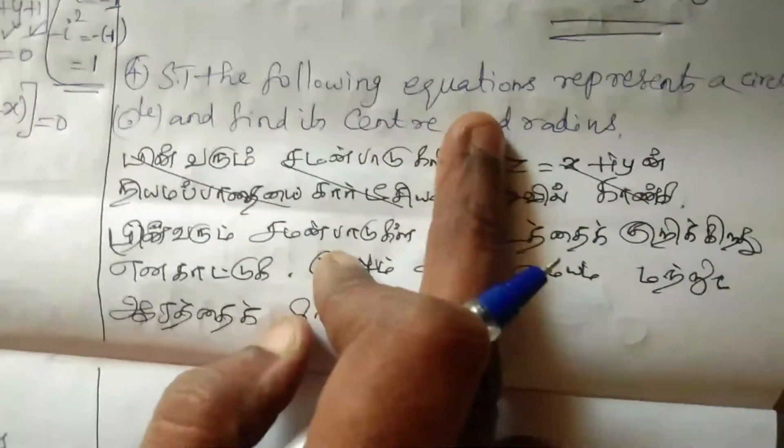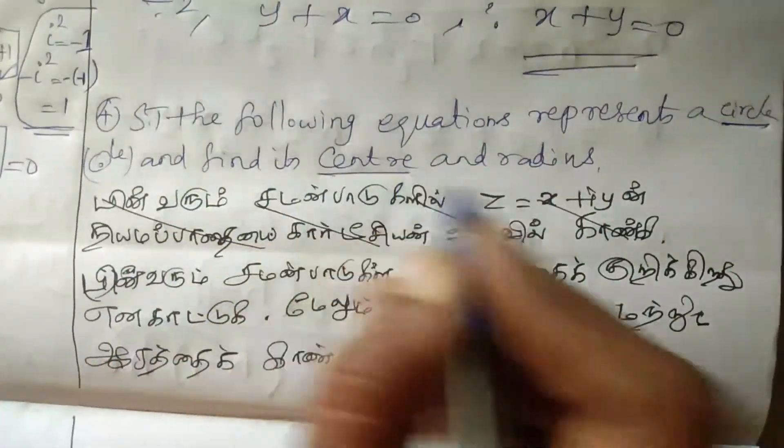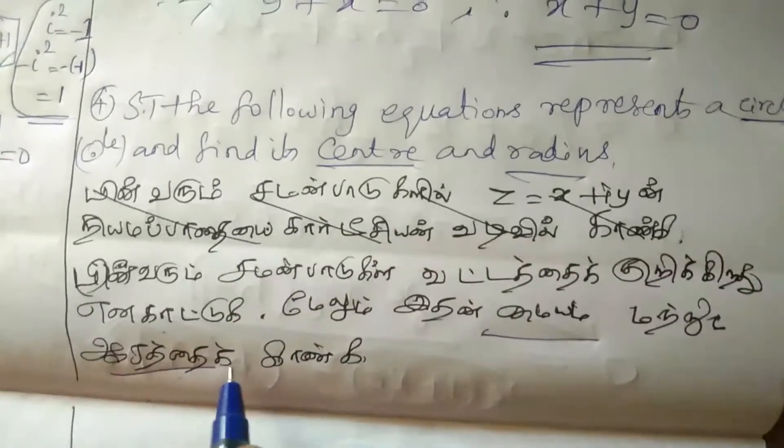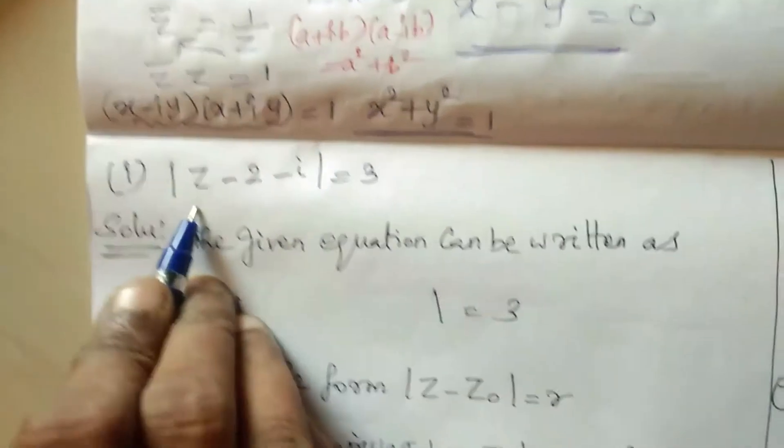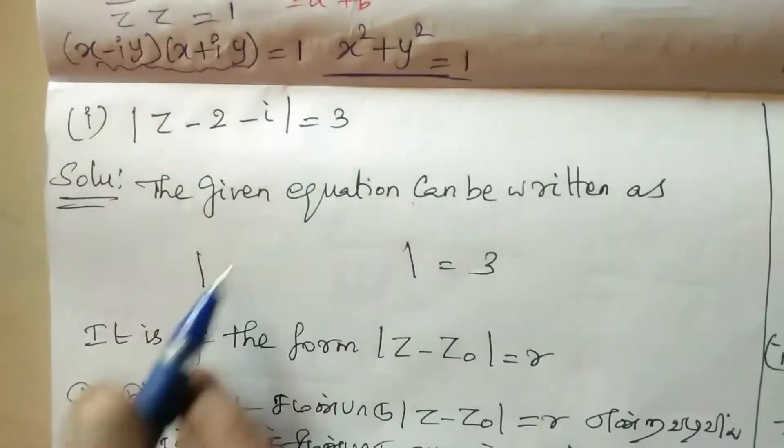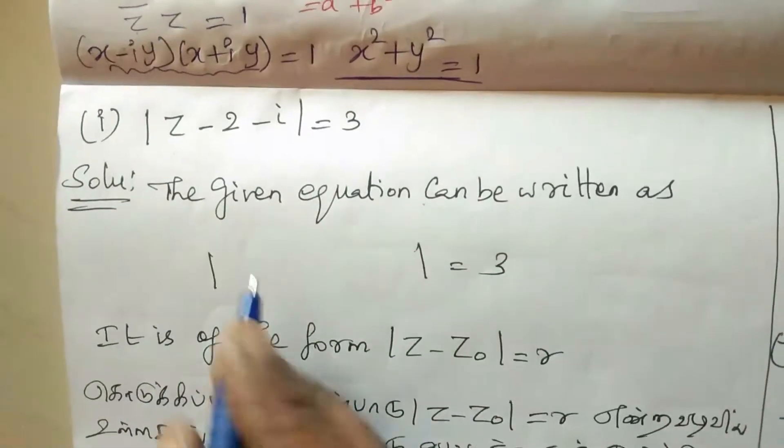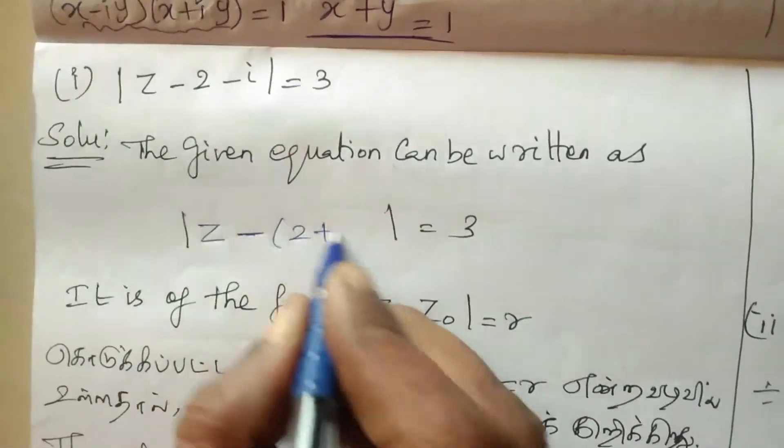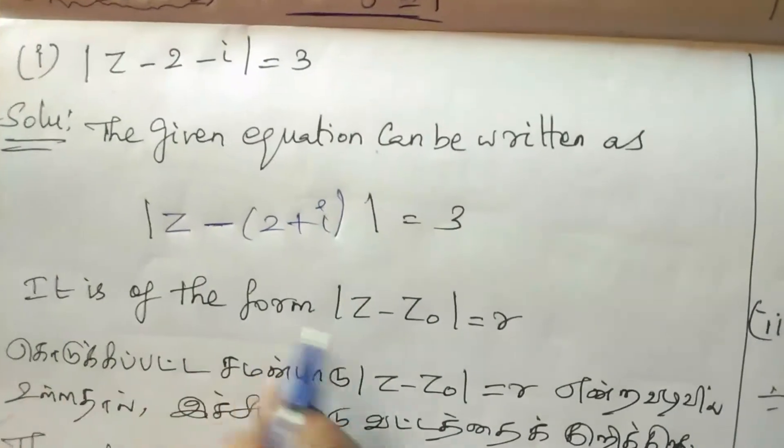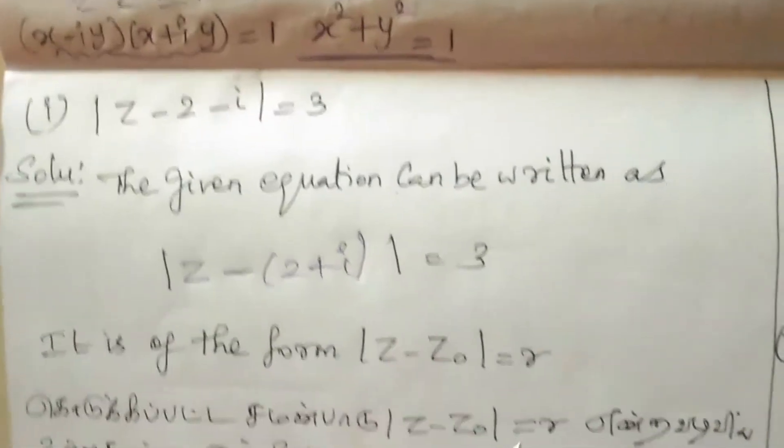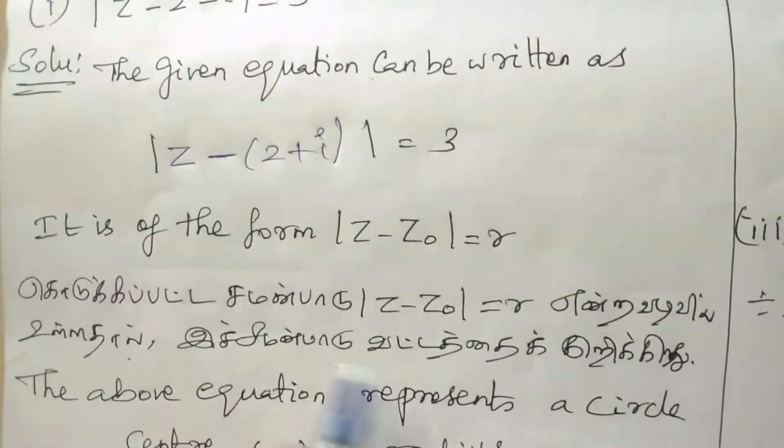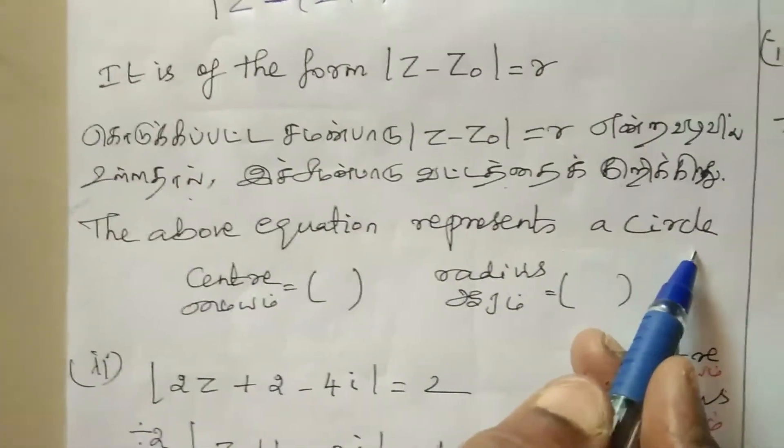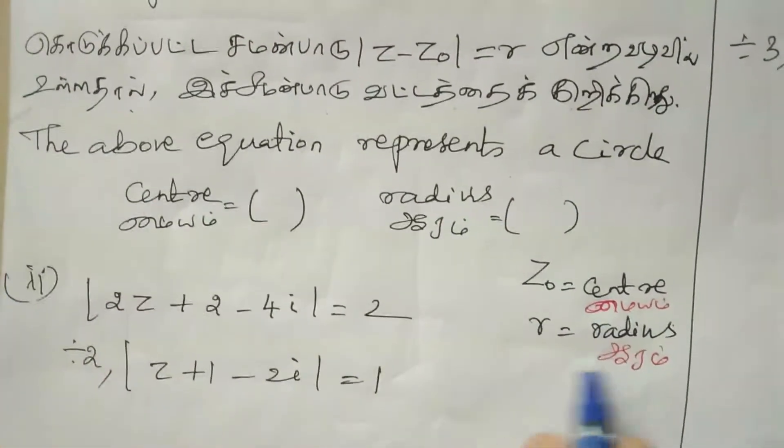Fourth question: show that the following equations represent a circle and find its center and radius. Modulus of Z minus 2 minus I equal to 3. The given equation can be written as Z minus Z not formula.